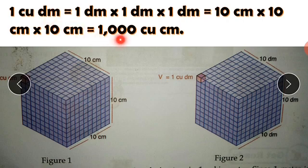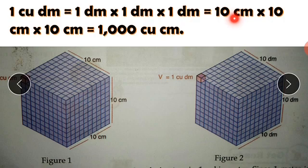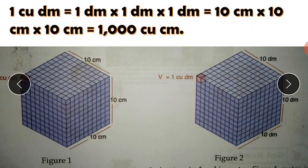One cubic decimeter is equal to 1000 cubic centimeters. Since one decimeter is equal to 10 centimeters, we get 10 centimeter times 10 centimeter times 10 centimeter, which equals 1000 cubic centimeters. So 1000 cubic centimeters is equal to one cubic decimeter.